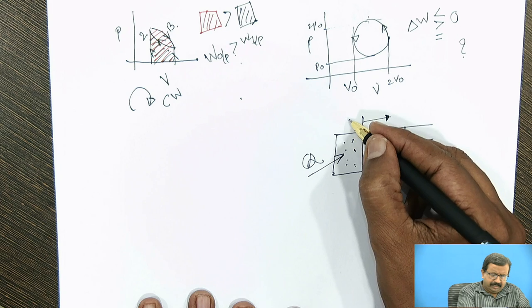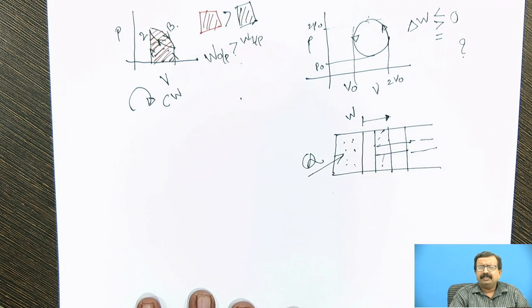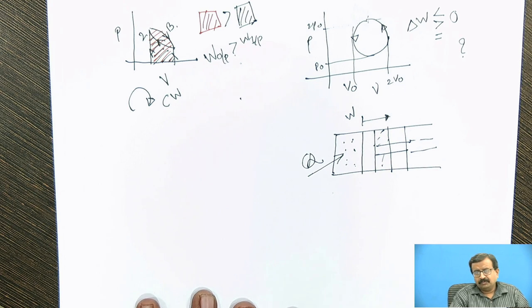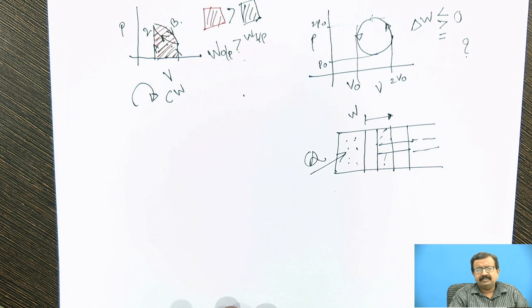So the work done, if I show it by symbol w, actually it is wrong to show it by absolute number because work and heat both are path functions. And already we know how we define work and heat. Once again I repeat it here for your clarity: work and heat both are energies in transit. And unless and until they cross the boundary, we don't call them as work and heat. That is first part.